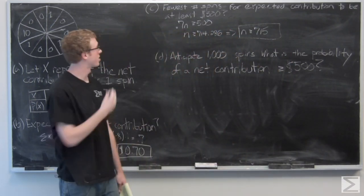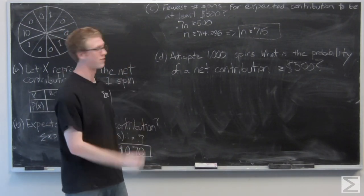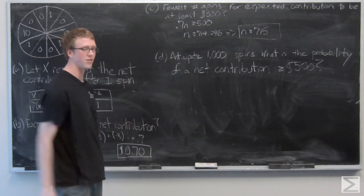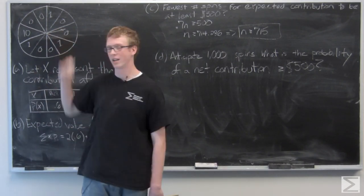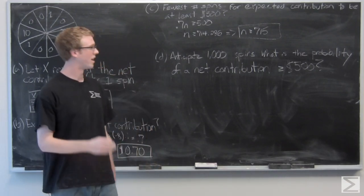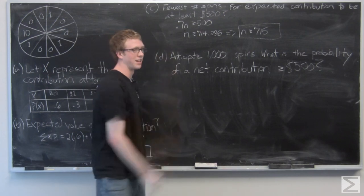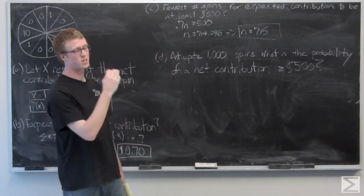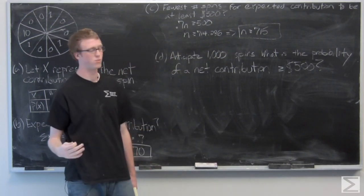So we're expecting that the fewest number of spins for the expected contribution to be at least $500 is 715. That's not necessarily true—you could have a couple hundred spins landing on the 10 for no apparent reason, it's complete probability—but we're guessing that the fewest number of spins for the expected contribution, the key word is that that contribution is what is expected.